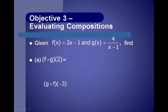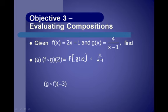Objective 3: evaluating compositions. If f of x equals 2x minus 1 and g of x equals 4 over x minus 1, find f of g of 2. We start on the inside: g of 2 means substitute 2 for x in g, giving 4 over 2 minus 1, which is 4 over 1, equals 4. Then find f of 4: substitute 4 into f, giving 2 times 4 minus 1, which is 8 minus 1, equals 7.